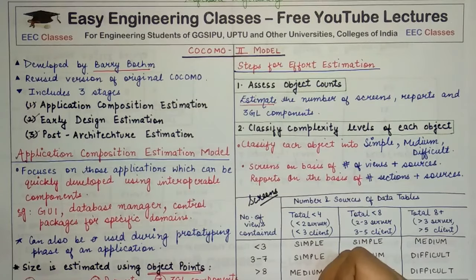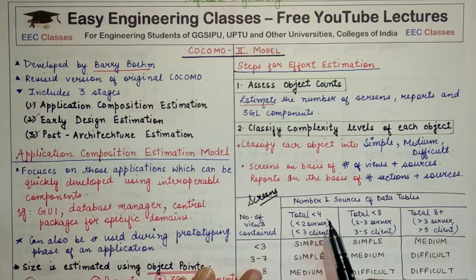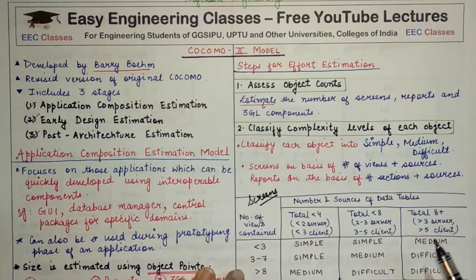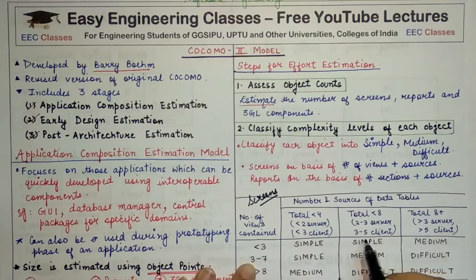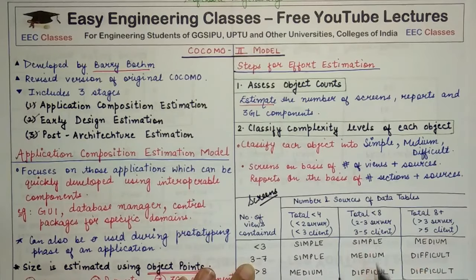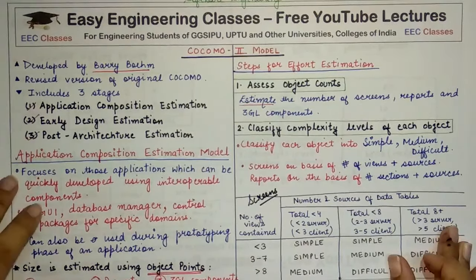For screens, once you have determined which row your value falls in, you then check the total number of server data tables (sources) connected to that screen. For example, suppose your number of views is 4 — you look at the second row. And you know that the number of server data tables is between 2 to 3 and you have 4 data tables, so you see the intersection in the second row, which gives the category 'medium.' That is how we categorize screens.